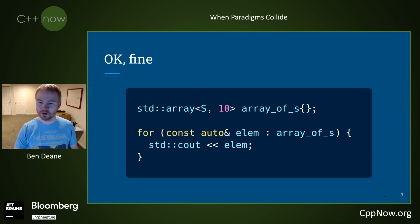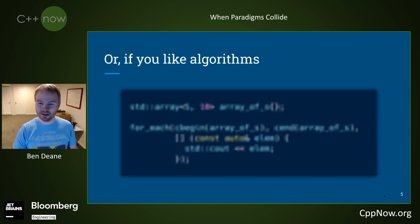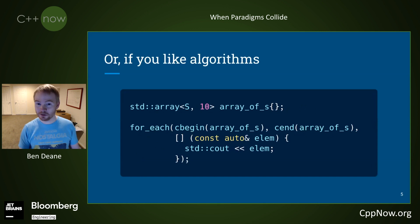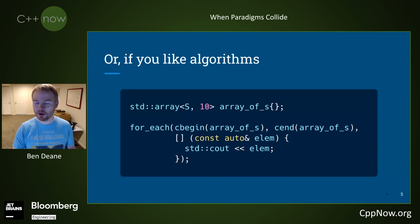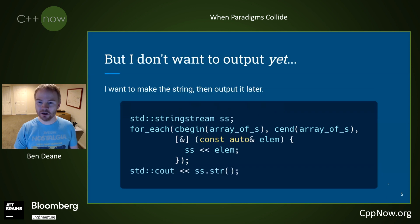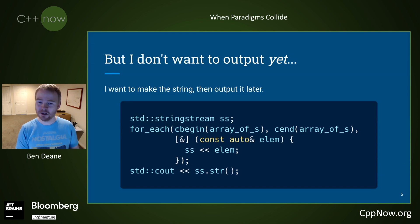But if you like algorithms, as I do, maybe you want to say for_each. This is OK. But maybe you don't want to print them out now — maybe you want to print them out later and make a string of them. So you want to try something like this: make a string stream, put them into that, and then print them out or send them off somewhere else.